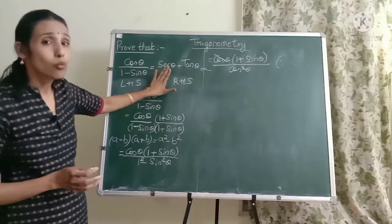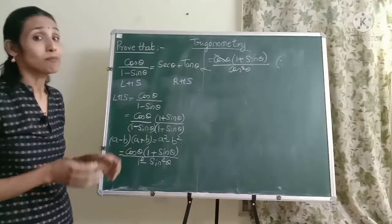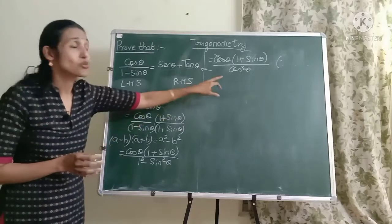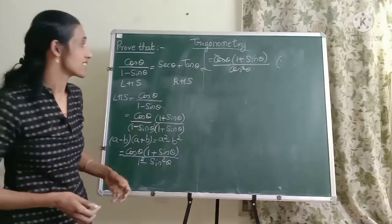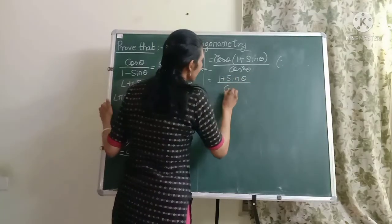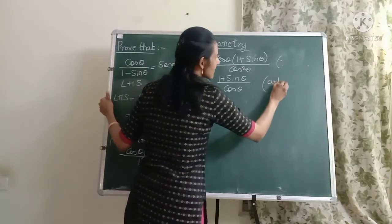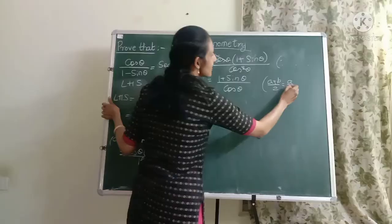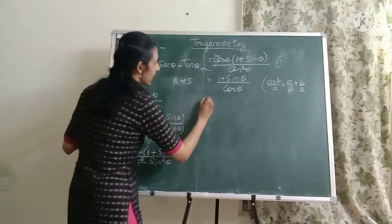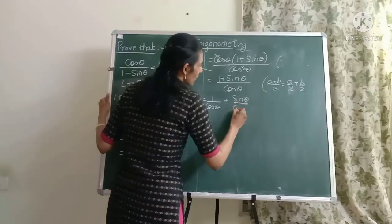Again have a look at what you want. You want sec theta plus tan theta. Are we coming closer to that? Definitely I can say because I have now reduced the denominator from 2 terms to 1 term. So that's a good progress. Now let me see what do we end up with. We get 1 plus sin theta divided by cos theta. Now is it not of the form that we were discussing before friends? Something like this. Can't I write this as a by 2 plus b by 2? Definitely. So that's what we are going to do here.